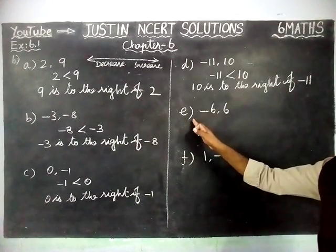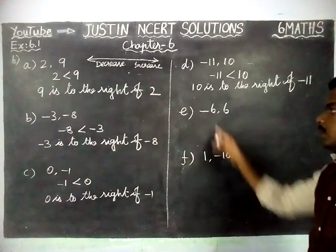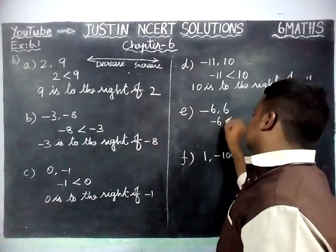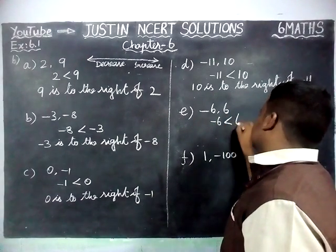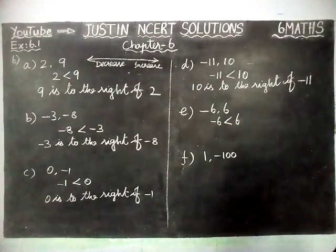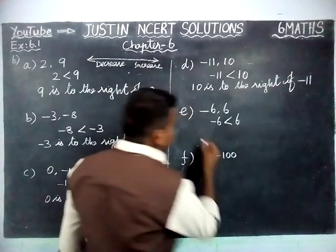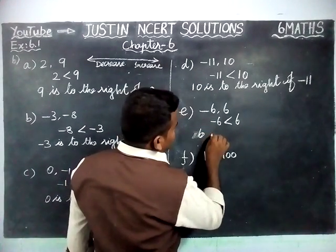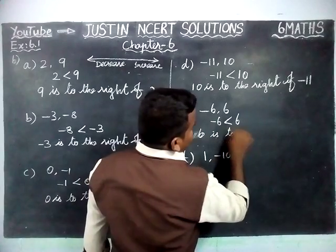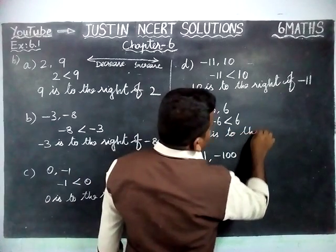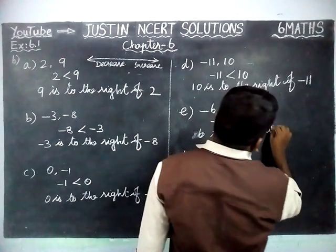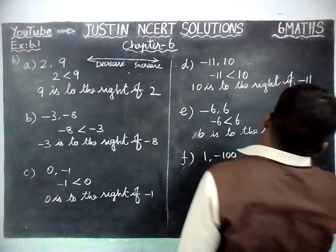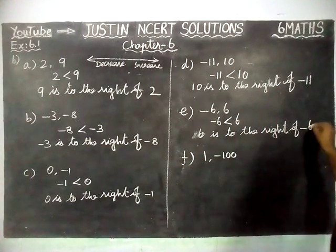Part E: minus 6 and plus 6. Minus 6 is less than 6. 6 is the greatest number, therefore 6 will come on the right hand side. So, 6 is to the right of minus 6.